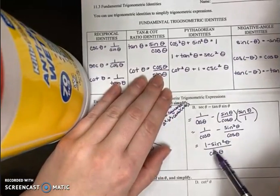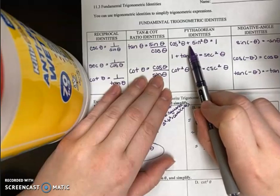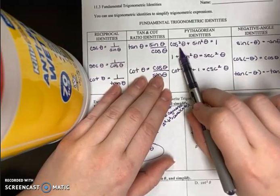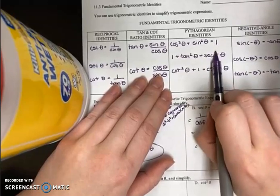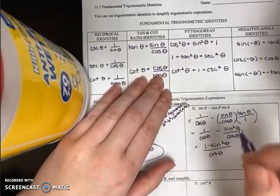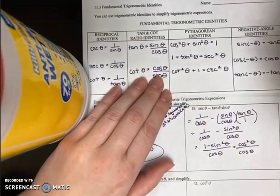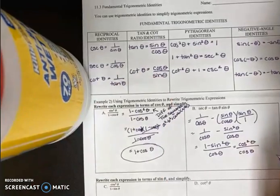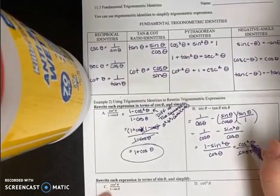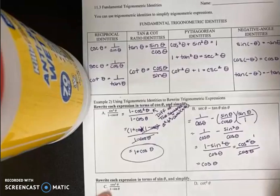One minus sine squared theta reminds me of my Pythagorean identity. If I subtract sine squared theta from each side of cosine squared theta plus sine squared theta equals one, I get cosine squared theta equals one minus sine squared theta. So one minus sine squared theta is equal to cosine squared theta. I have that over cosine — this is similar to x squared over x. Cosine squared over cosine reduces to the first power, so that's cosine theta as our final answer.